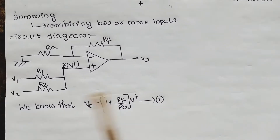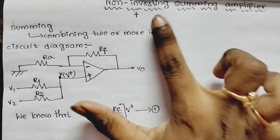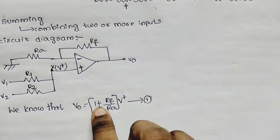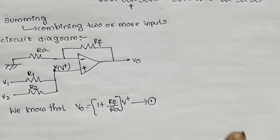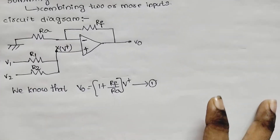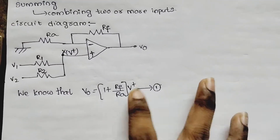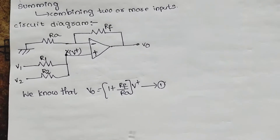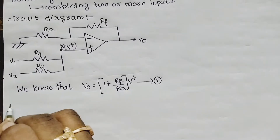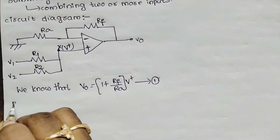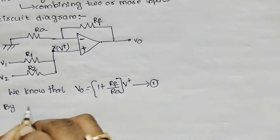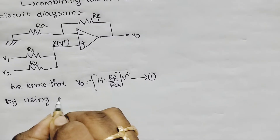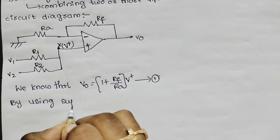We already know what we get from the non-inverting amplifier: the gain is 1 plus Rf by R. So that is the first equation to consider. Next, we will get the equations by using the superposition theorem.